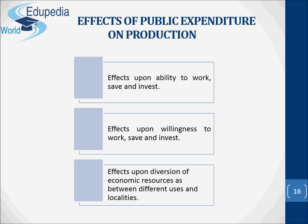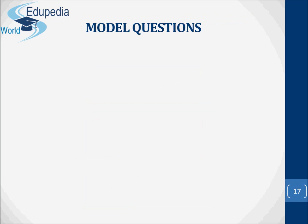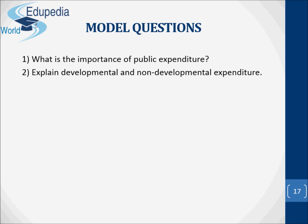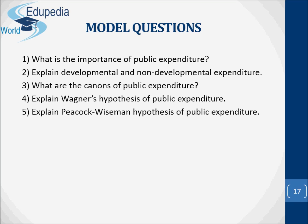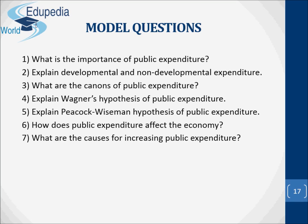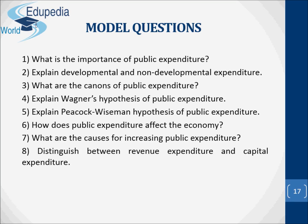Now I am going to present some model questions. One, what is the importance of public expenditure? Two, explain developmental and non-developmental expenditure. Three, what are the canons of public expenditure? Four, explain Wagner's hypothesis of public expenditure. Five, explain the Peacock-Wiseman hypothesis of public expenditure. Six, how does public expenditure affect production? Seven, what are the causes for increasing public expenditure? And finally, distinguish between revenue expenditure and capital expenditure.